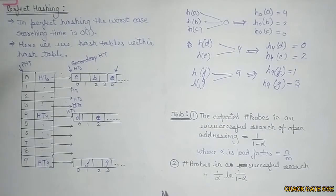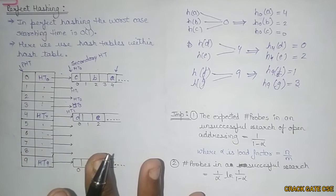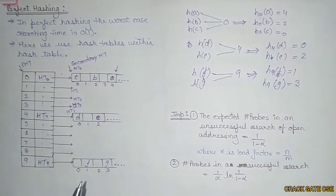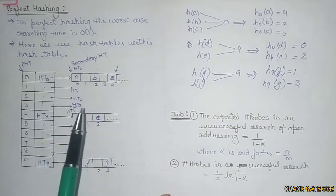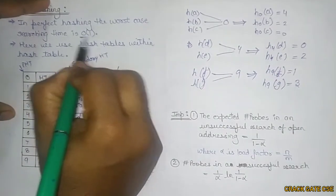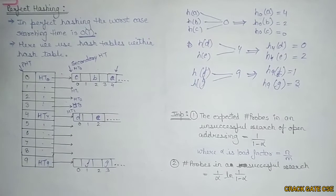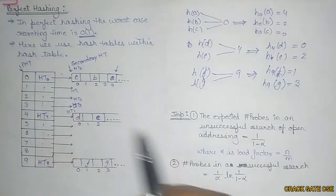Here you can see that if you try to search any particular key, there will be very few collisions or we can say there will be no collisions. Because of this hash table within hash tables, the searching time is claimed to have constant or O(1). This is how perfect hashing works. The worst case time complexity is O(1) using this hash table within hash table.